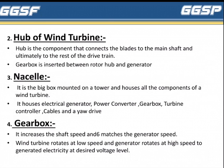Next is the Gearbox. It increases the shaft speed and matches the generator speed. Wind turbines rotate at low speed while the generator rotates at high speed to generate electricity at the desired voltage level.